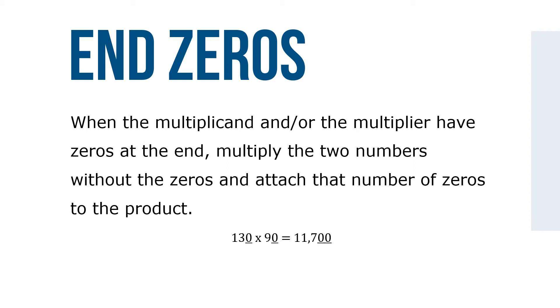When the multiplicand and/or the multiplier have zeros at the end, multiply the two numbers without the zeros and attach the number of zeros to the product. For example, 130 times 90 equals 11,700.